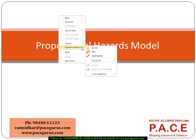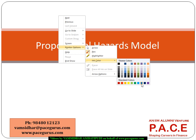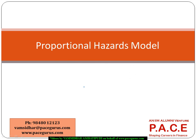One of the most important models for estimating the future lifetime is the proportional hazards model. We are trying to use one of the more famous proportional hazards models, which is called the Cox regression model.